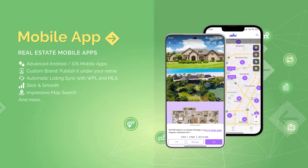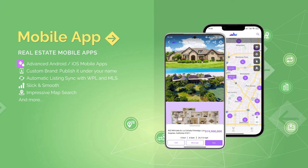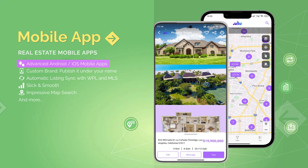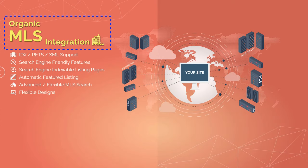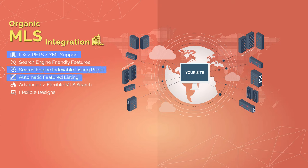If you really want to step it up, you can also acquire their iOS and Android app, which can be linked directly to your website's database — so whatever your users see on the app is the exact same as on your website. All of this is possible thanks to their organic MLS integration, which means you can fetch thousands of properties using IDX, RETS, and XML. To make sure people find those properties, it comes with a feature that allows listing pages to be indexed by search engines, plus automatic featured listings and advanced MLS search.